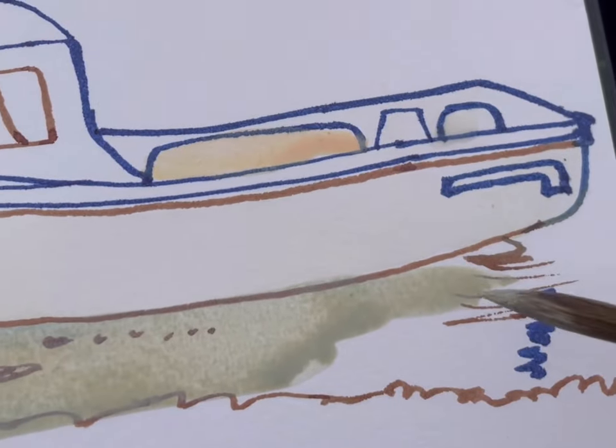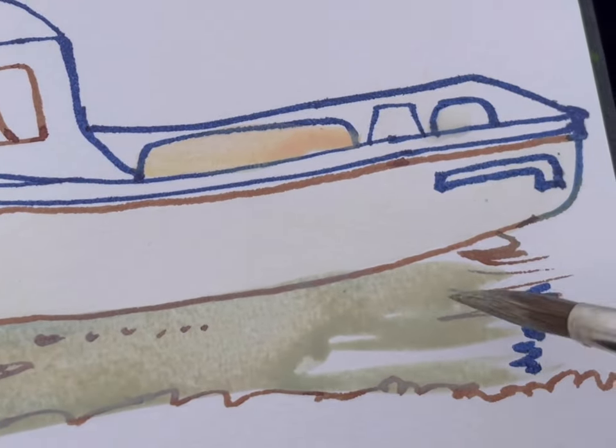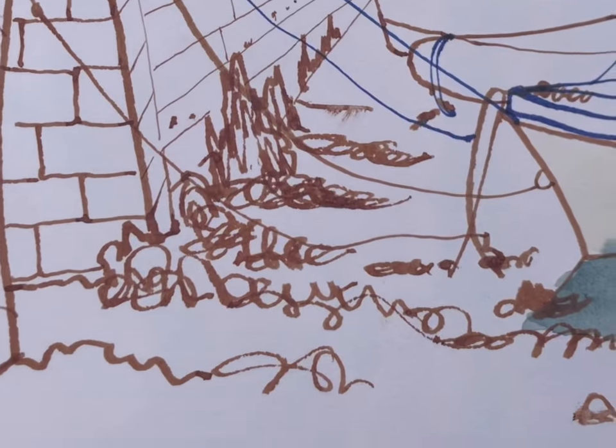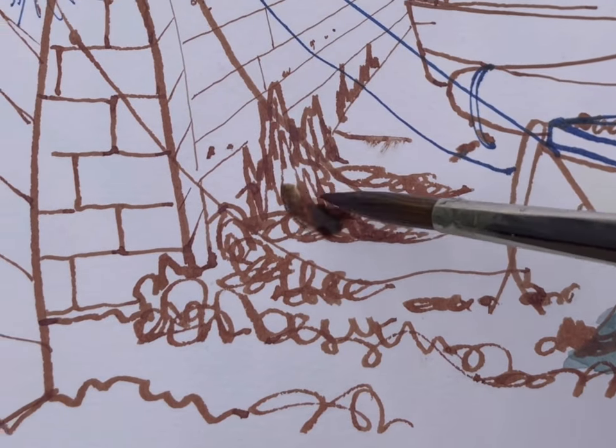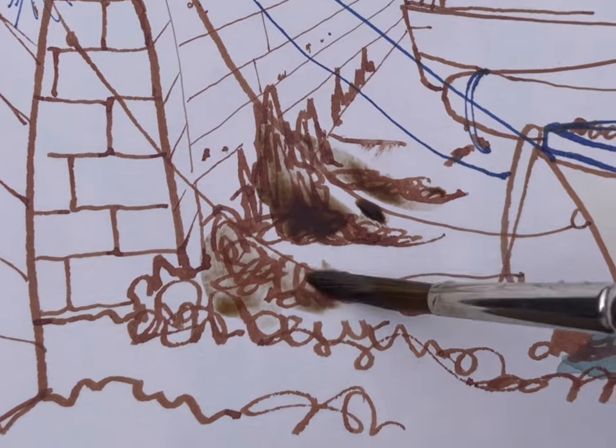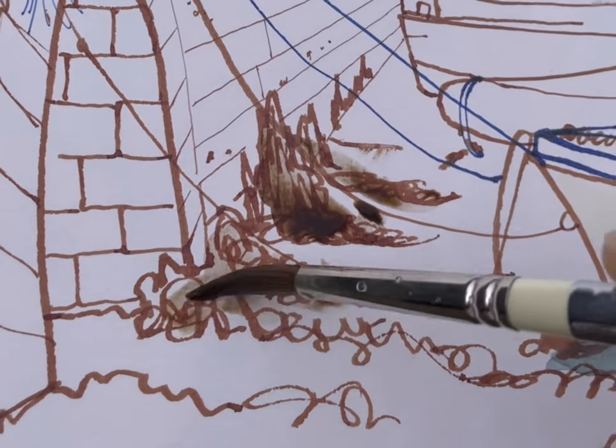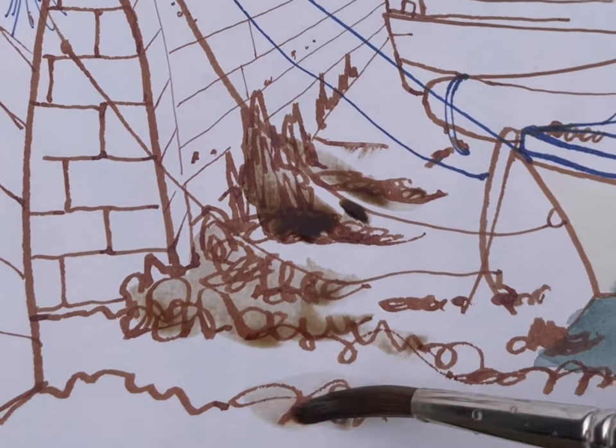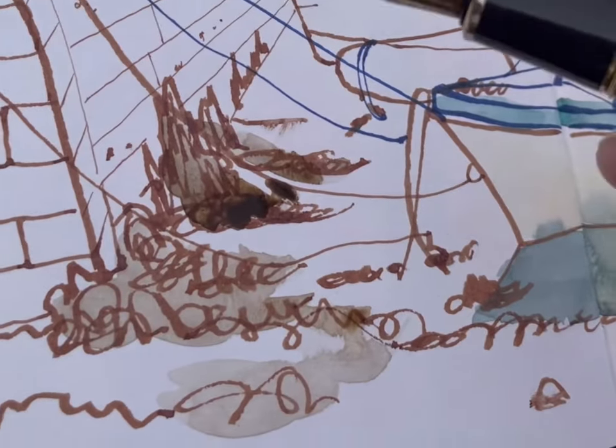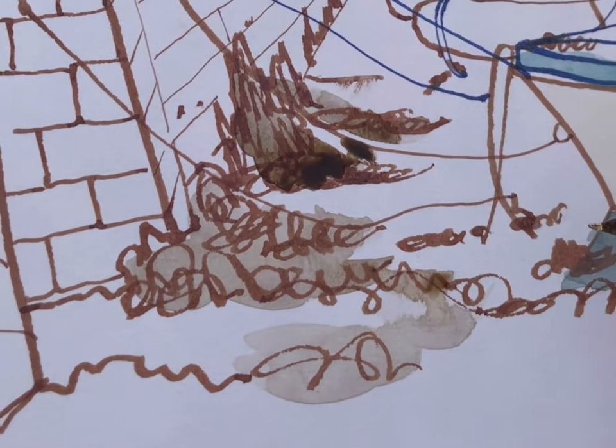Now everything gets reflected. Here I'm adding some burnt umber to the scribbly seaweed bits, and of course the beauty of Diamentas document ink is that it's completely waterproof.